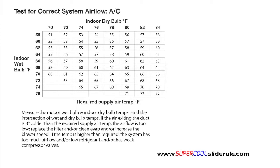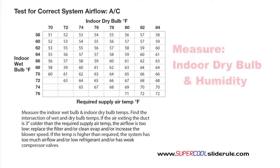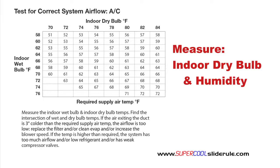You will find that in the upper left hand corner. If you don't have one, that's fine — we will walk you through it without it. Now measure your indoor dry bulb and humidity. Once you have these calculations, calculate your wet bulb by using the wet bulb conversion table located on the outer cover.